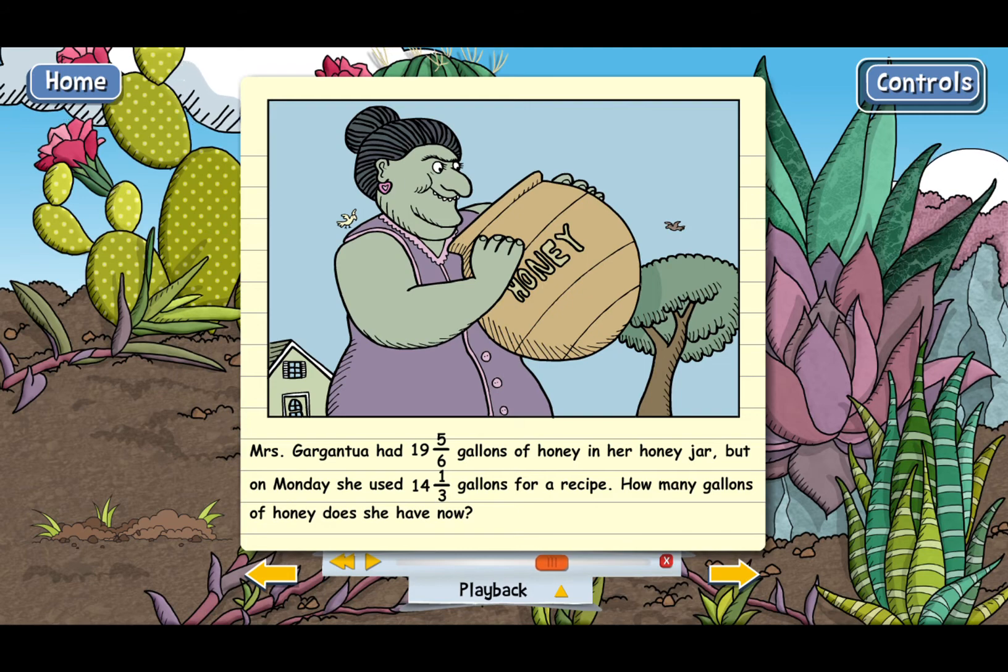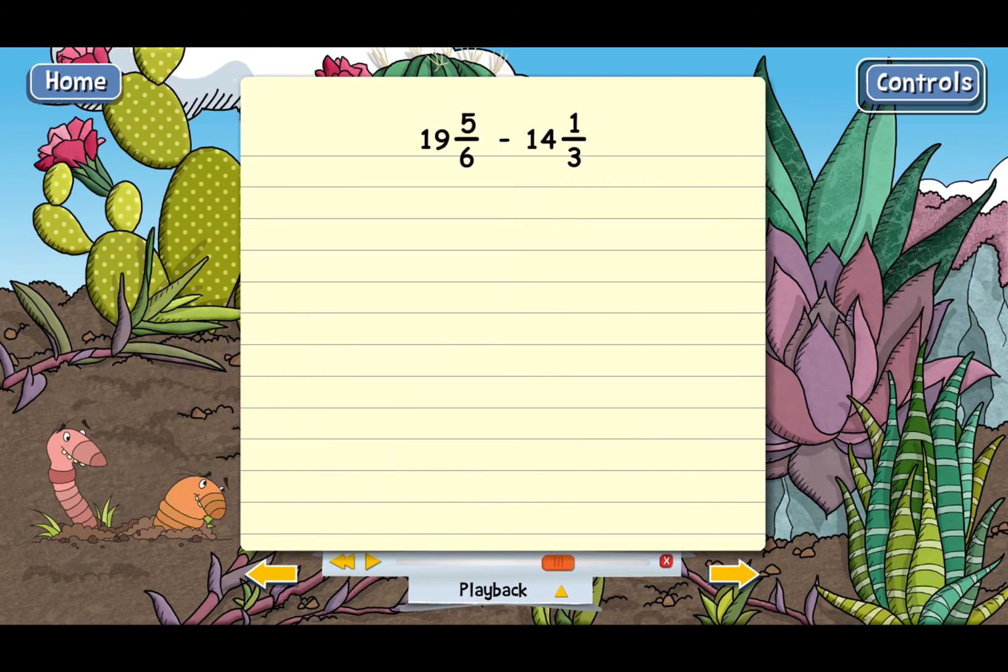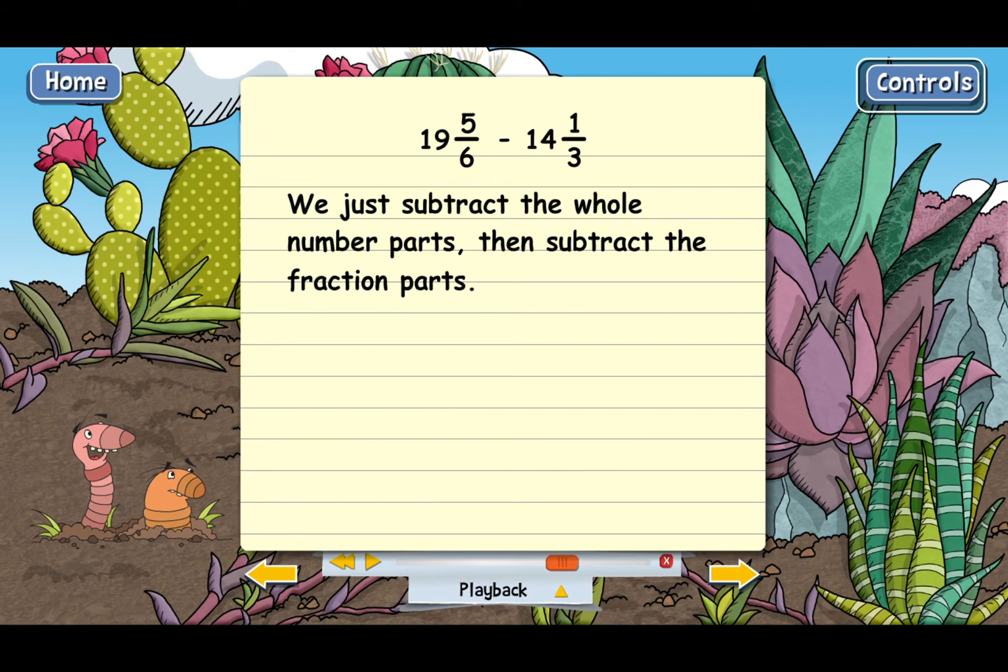Here we need to subtract 14 and one third from 19 and five-sixths. And you can probably guess how it's done. We just subtract the whole number parts. Then we subtract the fraction parts. We'll start with the whole numbers. 19 minus 14 equals five.